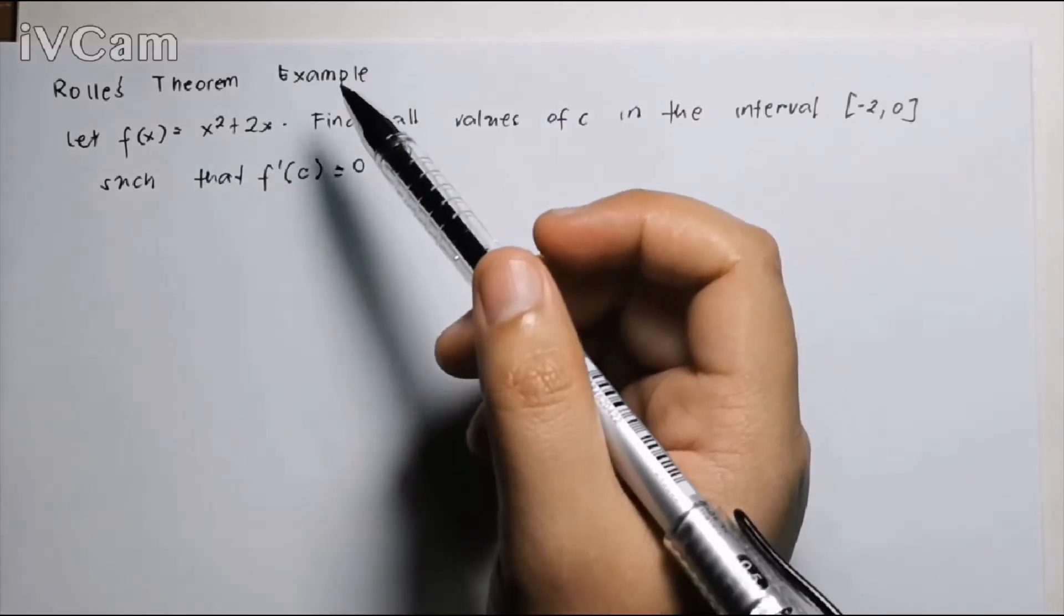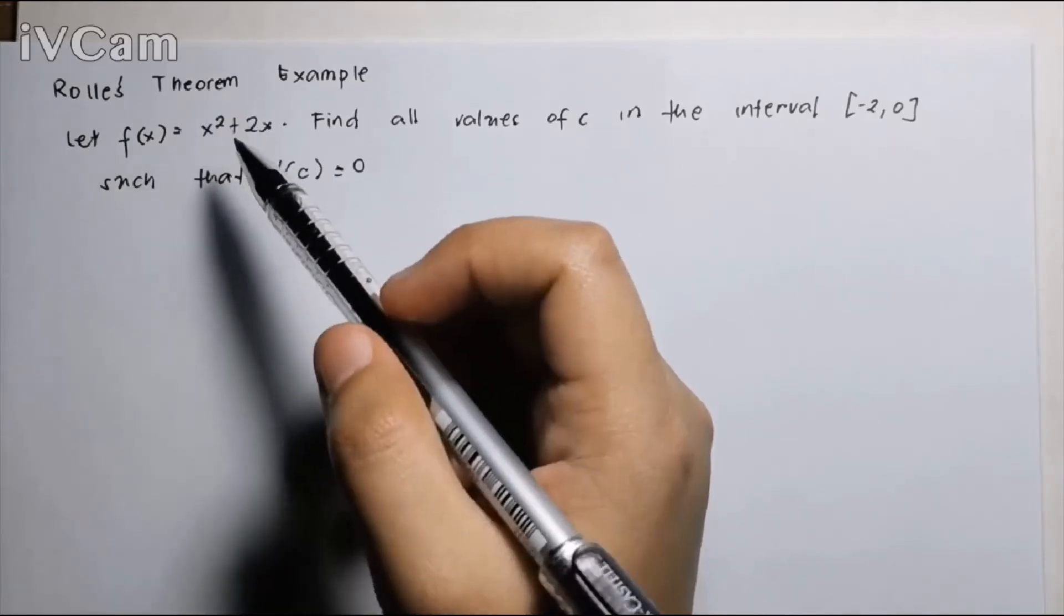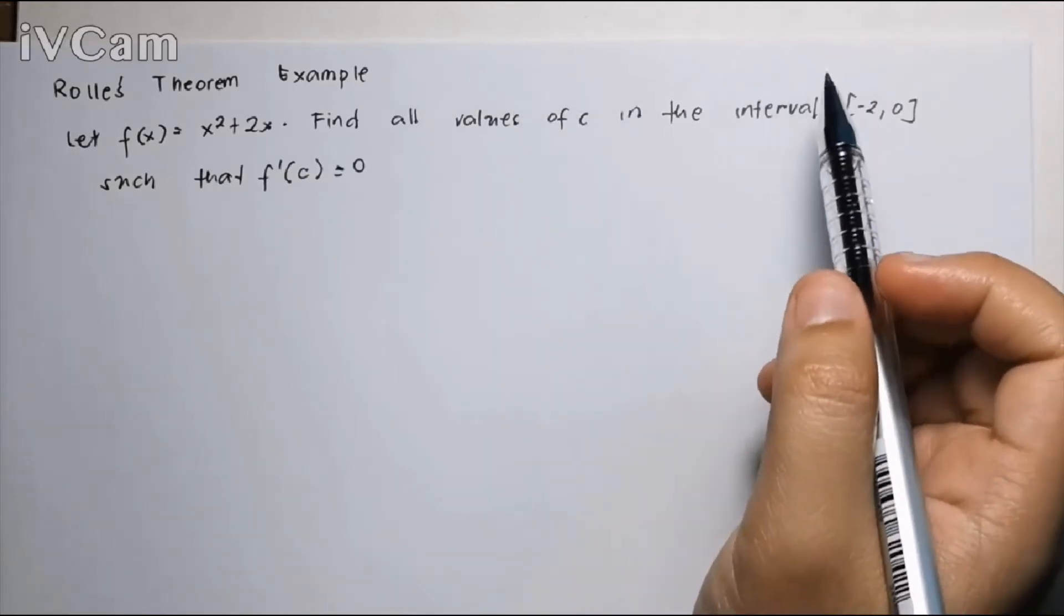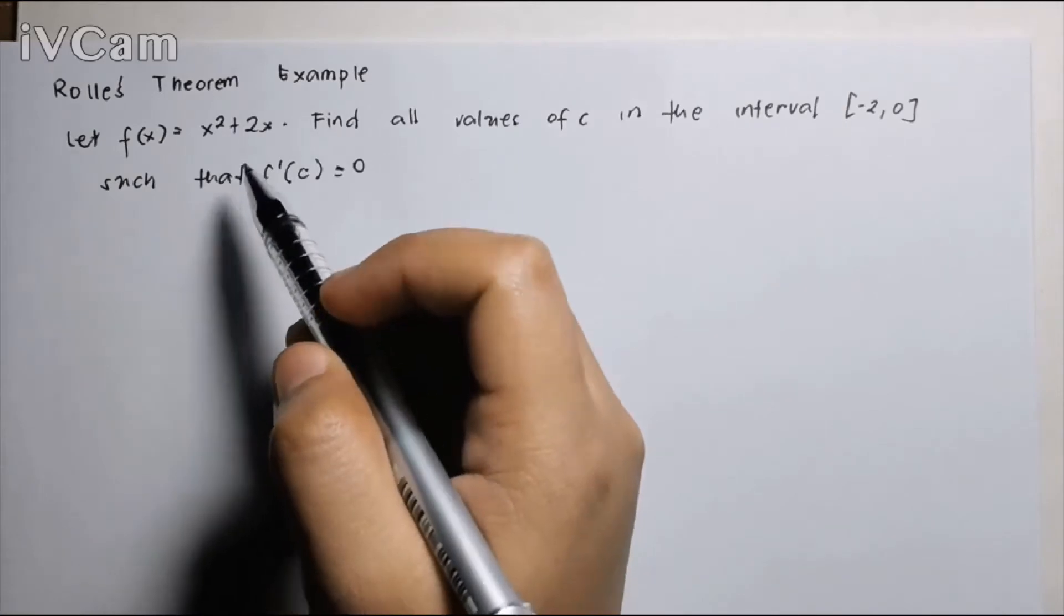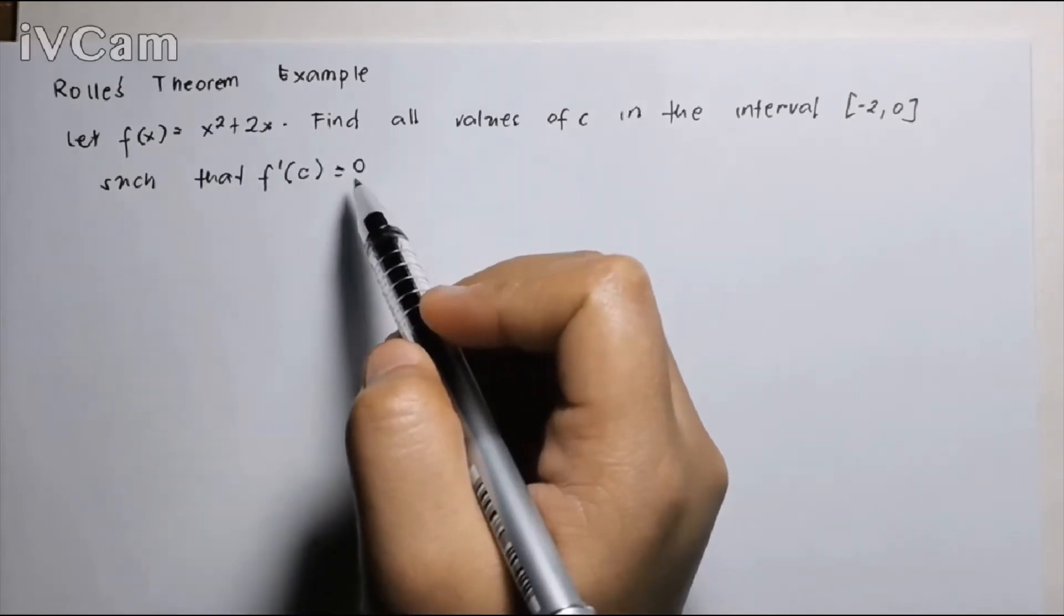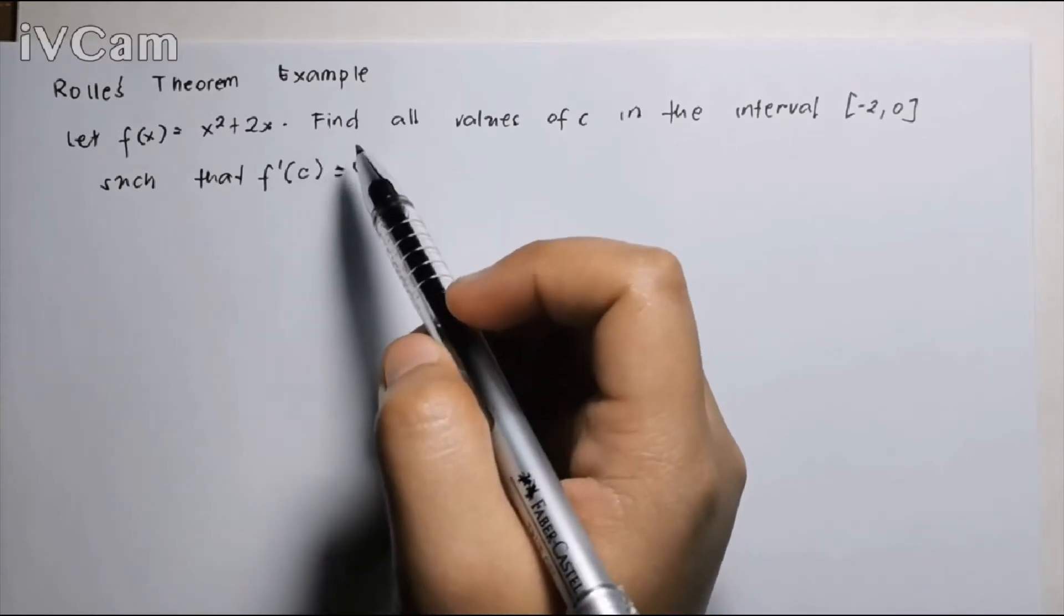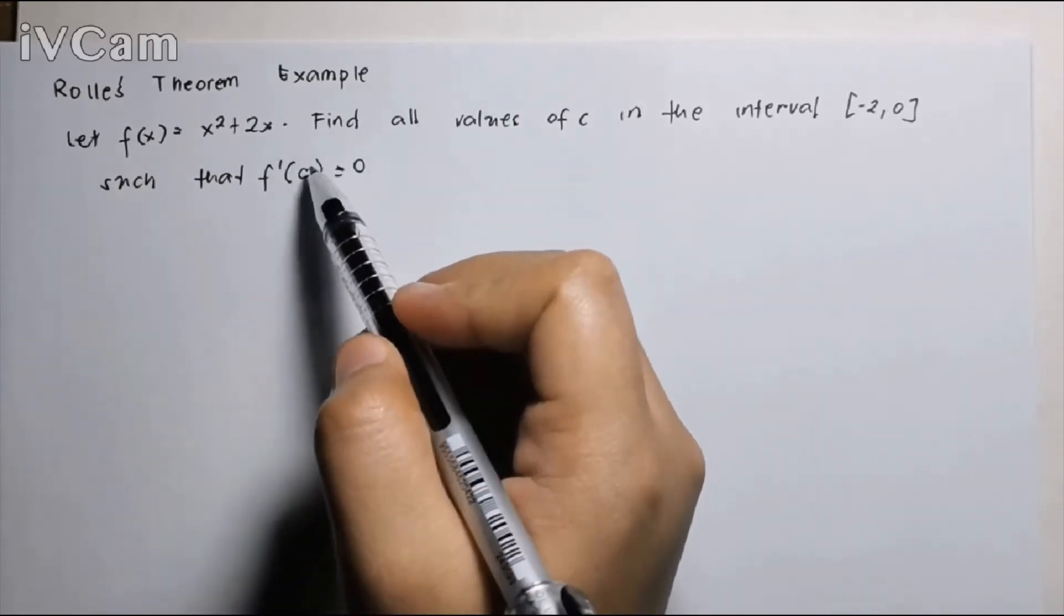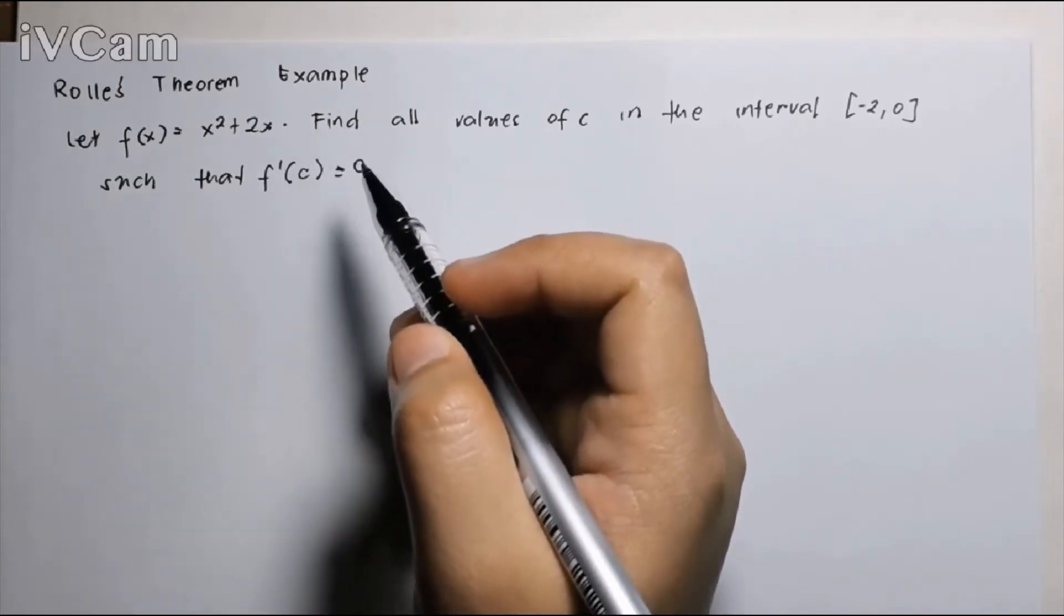Here is an example of Rolle's Theorem. Let f(x) equals x squared plus 2x. Now, our job is to find all the values of C in the interval from negative 2 to 0, such that f prime of C is equal to 0. That is, such that the derivative at that point is equal to 0. Or in other words, at that point, the tangent is 0.